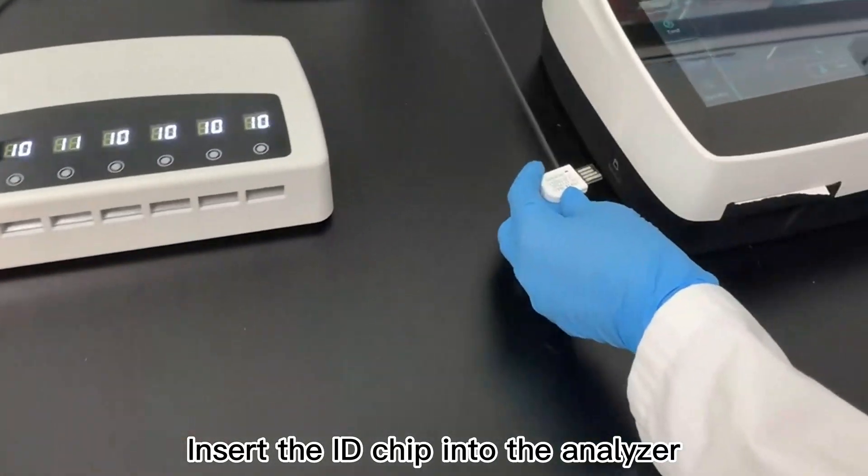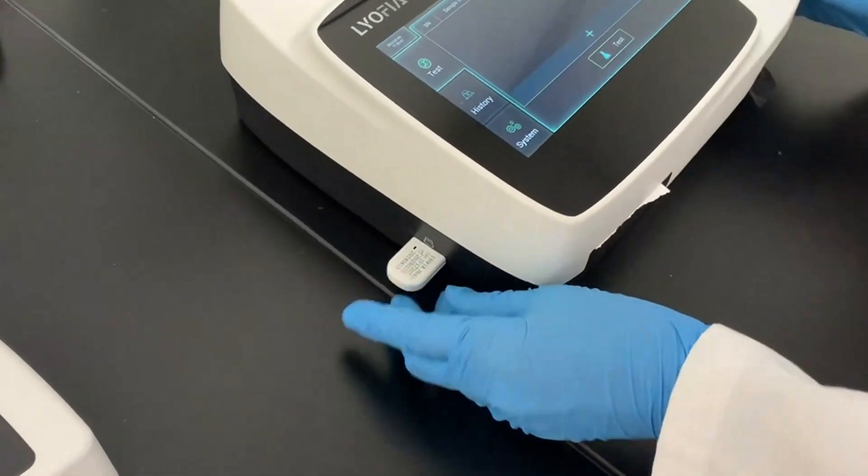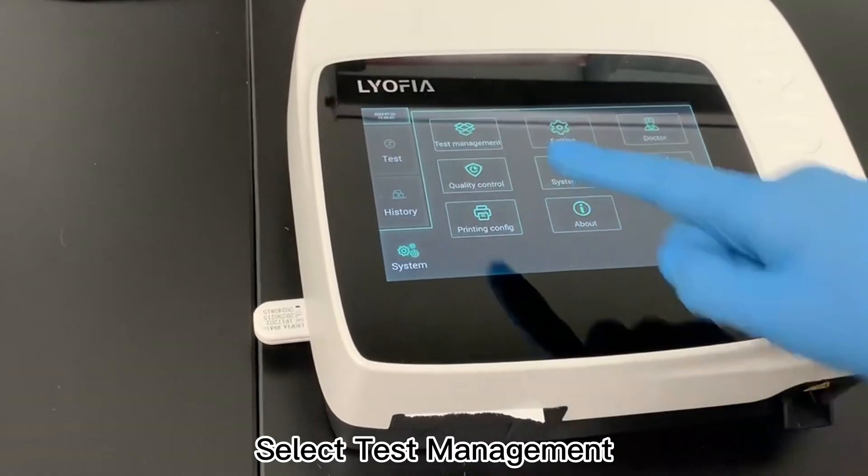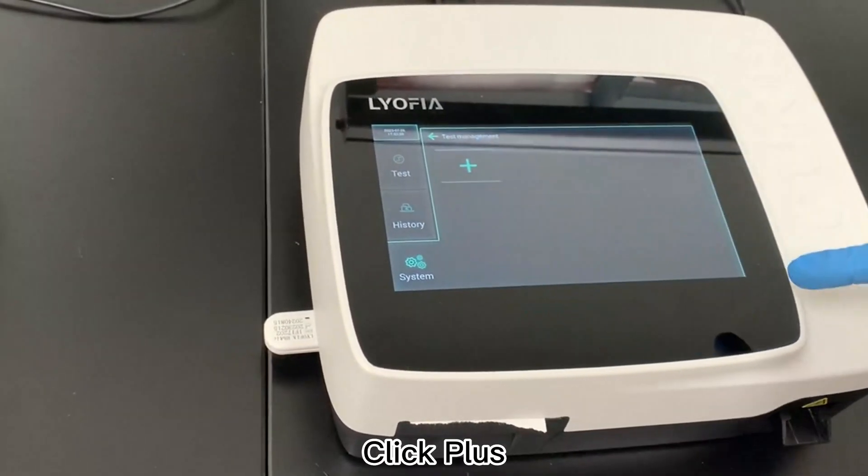Insert the ID chip into the analyzer. Click System, select Test Management, and click Plus.